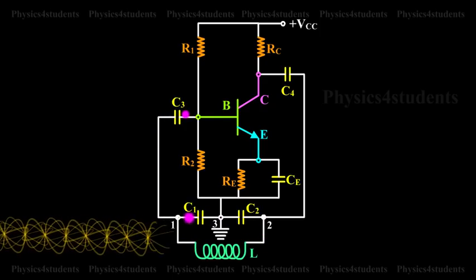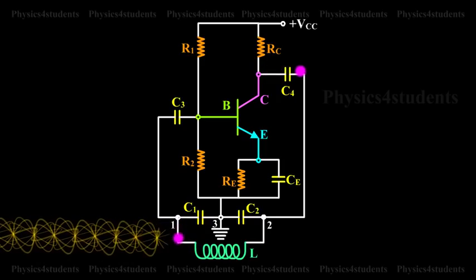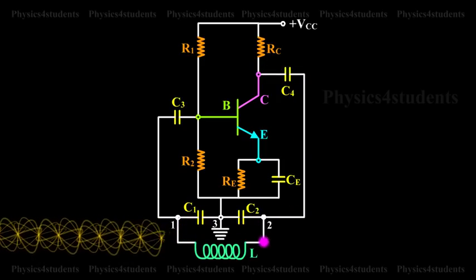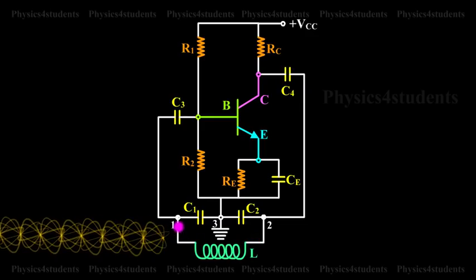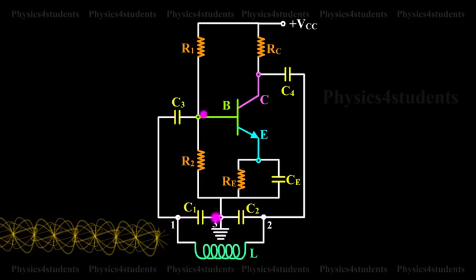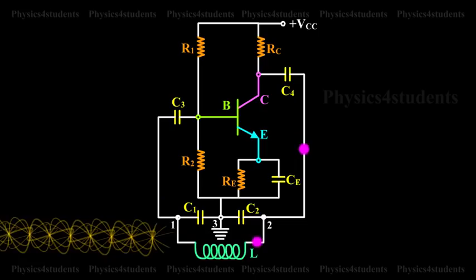The amplifier produces further phase shift of 180 degrees. Thus, the total phase shift is 360 degrees. In other words, energy supplied to the tank circuit is in phase with the oscillations. And if A-beta equals 1, oscillations are sustained in the circuit.